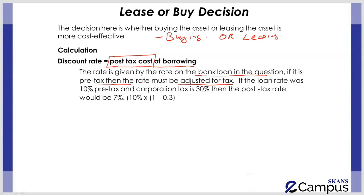For example, if the rate of interest is 10% pre-tax and the corporation tax is 30%, we make it post-tax using the formula: interest rate multiplied by (1 minus t), where t represents the rate of tax. So the post-tax interest rate will be 7%. The discount rate to use is the post-tax cost of borrowing.